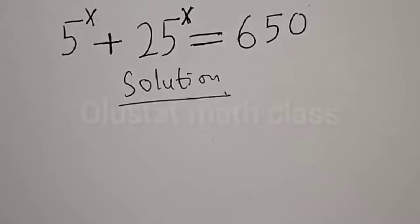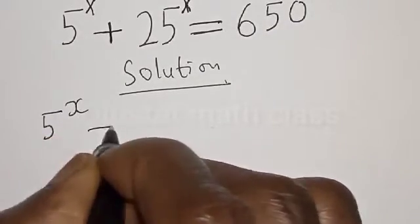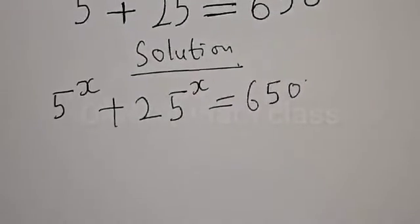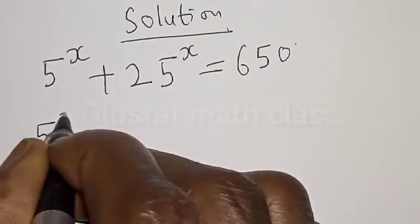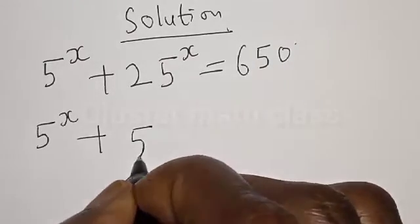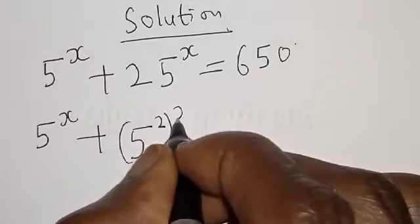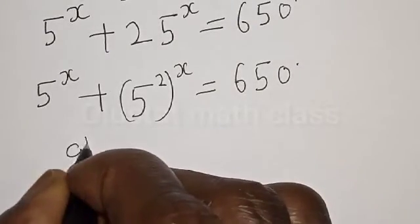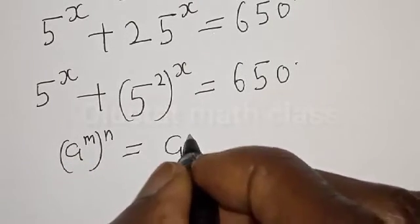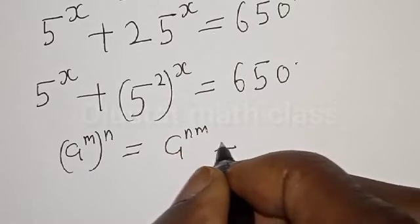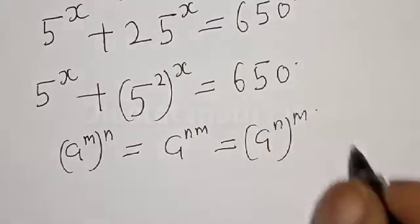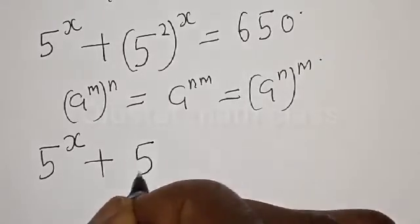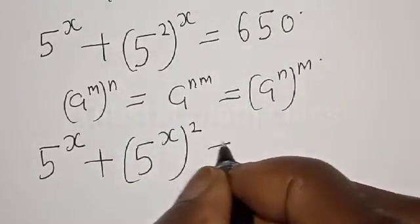Solution. We have the given equation: 5 raised to power of s plus 25 raised to power of s is equal to 650. Now remember, if you have a raised to power m raised to power of n, it is simply a raised to power of n multiplied by m, which is equal to a raised to power of n raised to power of m. Therefore, our equation becomes 5 raised to power of s plus 5 raised to power of s, all squared, is equal to 650.